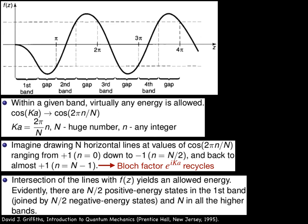The intersection of each of these lines with f(z) yields an allowed energy. Evidently, there are N/2 positive energy states in the first band, and N in all the higher bands.